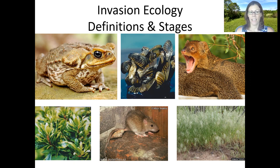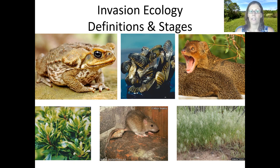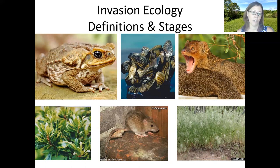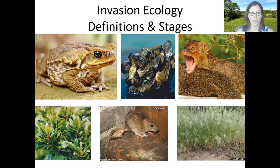The one in the upper left is the cane toad, invasive in Australia but native to South America. It was originally introduced to Australia to try to control pests in sugarcane because it eats insects. It turns out it also eats a lot more than just pests, so it's become a real problem. It's a generalist predator, gets really large — dinner plate size — and it's poisonous, so other animals can't eat it. Populations have gotten really out of hand in Australia.